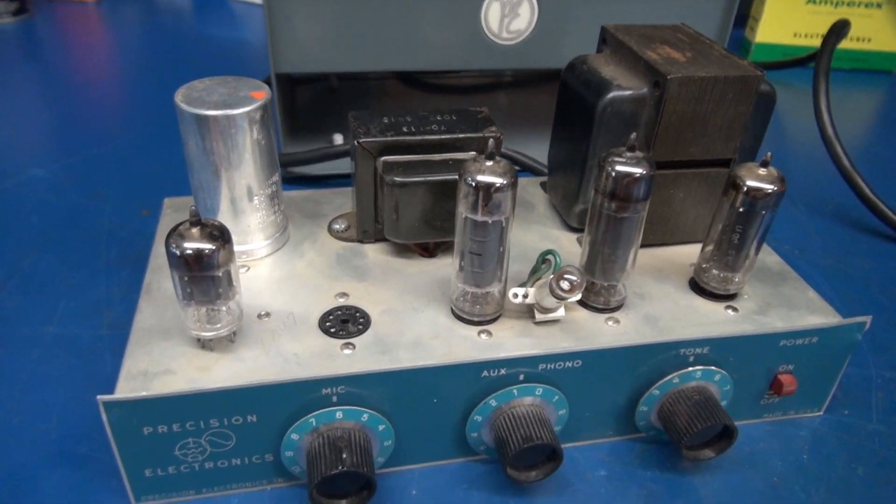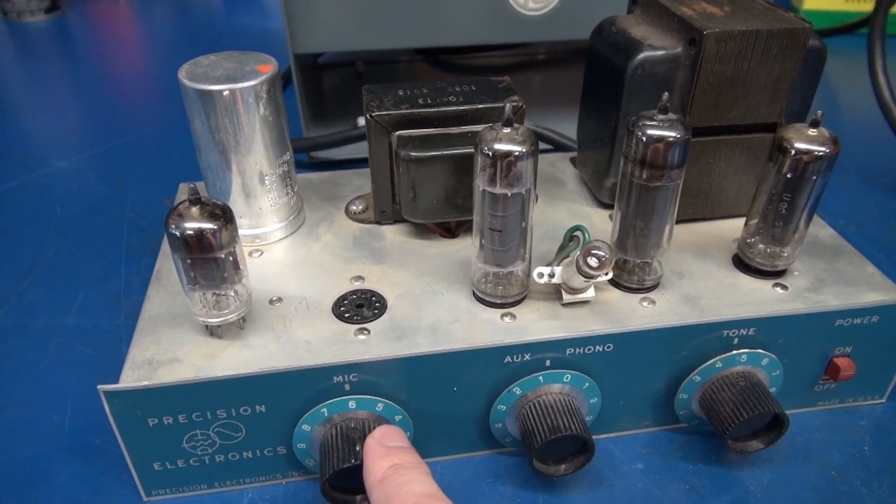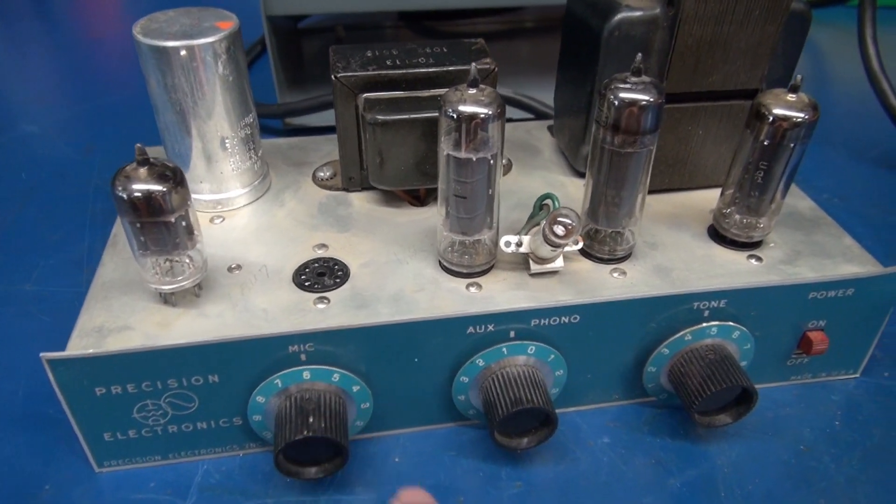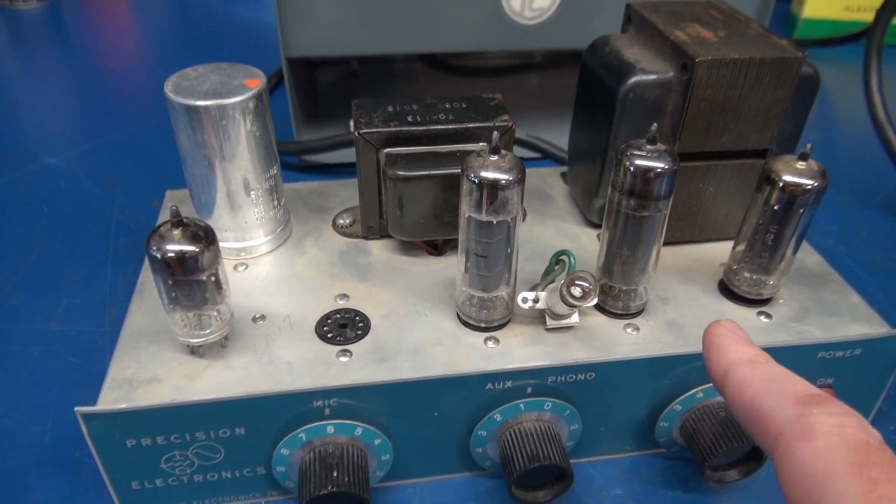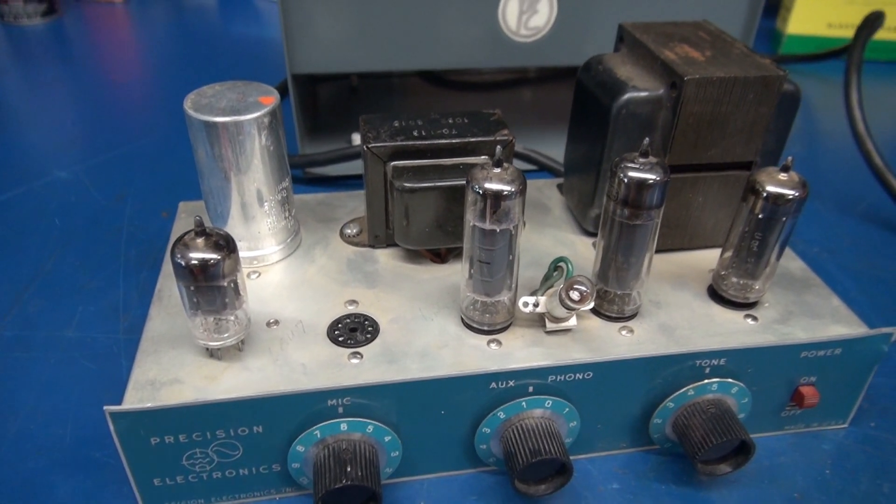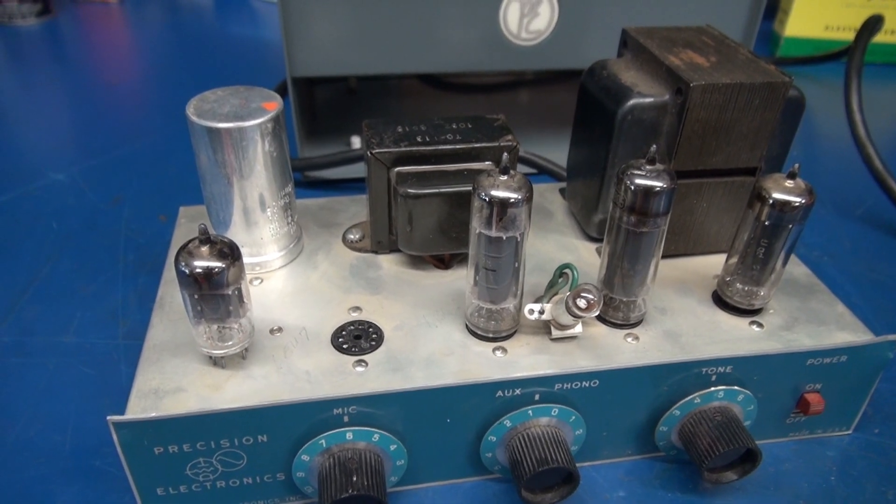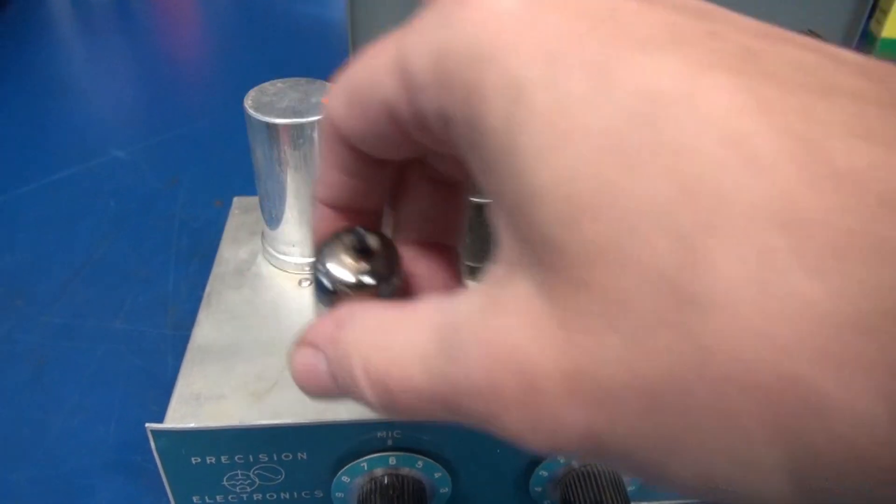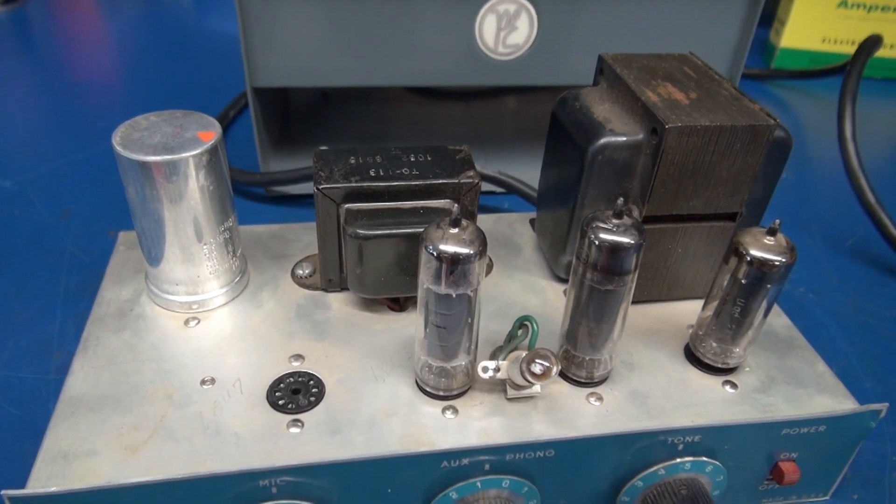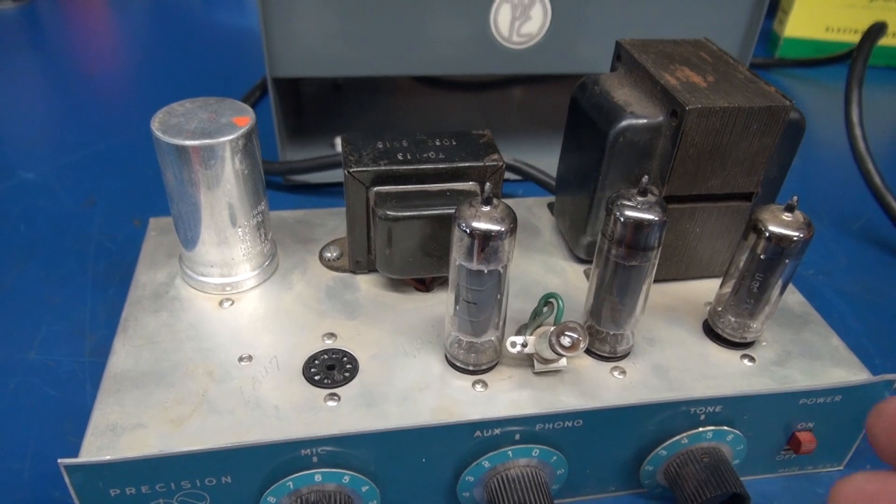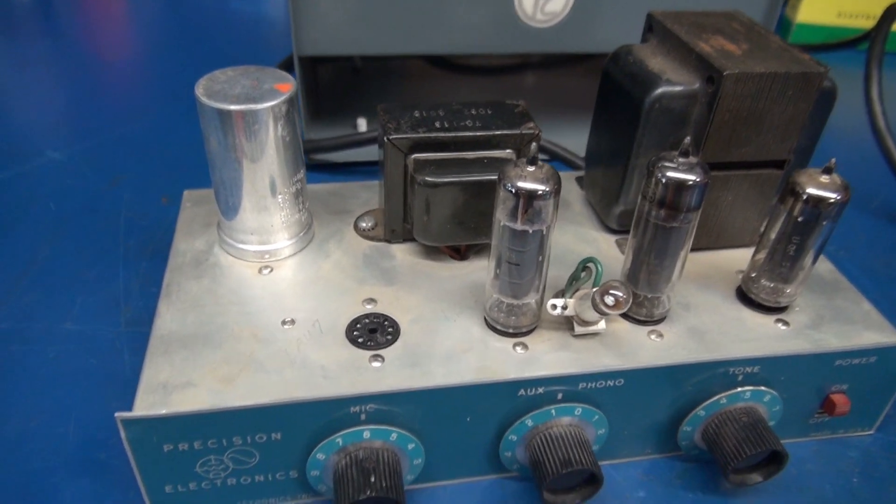Then on our controls, our mic input will be your volume. Then we'll have treble and bass. And around back, they had an old microphone type input. We're going to change that to a quarter inch input jack. Of course, the filter cap and other components of the amp are bad from age. So I'll be rebuilding that too. Should be a fun project.